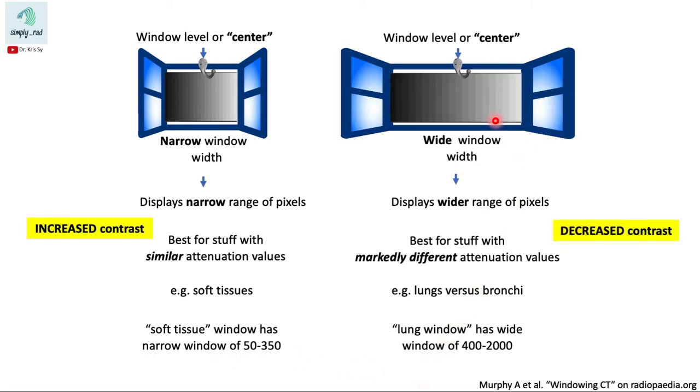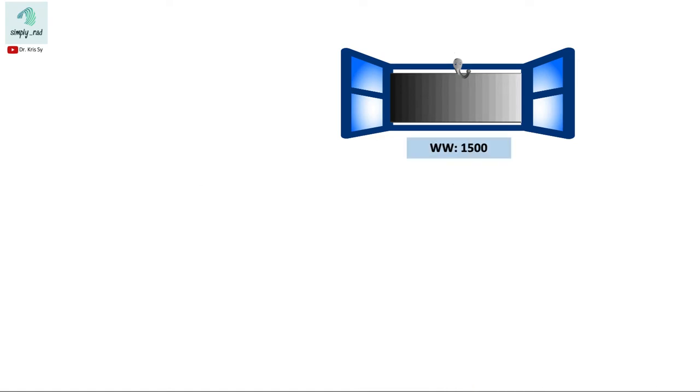On the other hand, a wide window shows a wider range of pixels. Since it's so wide, a little change in Hounsfield unit may not be too obvious, hence there is decreased contrast. A wide window is best for tissues with markedly different attenuation values. So for example, checking the lungs versus the bronchi or your airway.